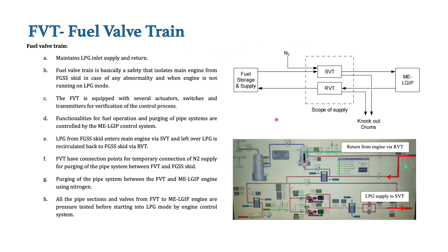As you can see from this diagram, this is the fuel storage and supply system, which we have already covered, and this is the main engine — the LGIP or dual fuel engine. This over here is the fuel wall train, which is basically a connecting link between the fuel oil supply system and the main engine. The fuel wall train is divided into two parts: the supply wall train and the return wall train.